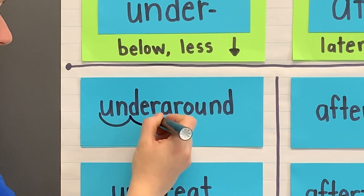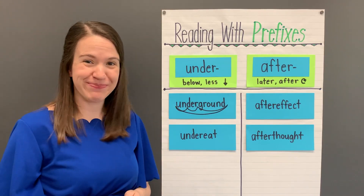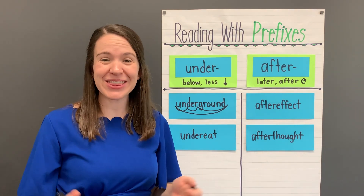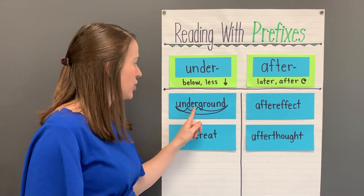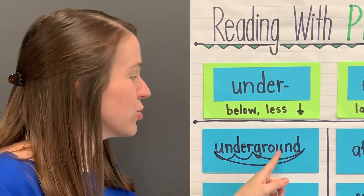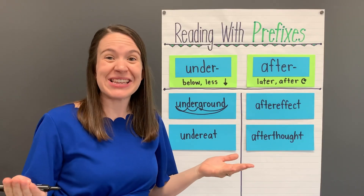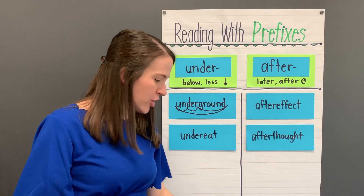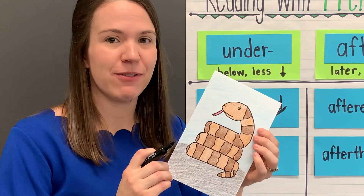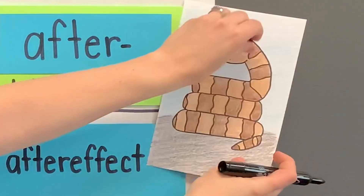Un-der-ground. Underground. This word is underground. We can understand this word by thinking about the prefix. Under means below or less, so underground means below the ground. While you might see some snakes burrowing underground, the northern water snake is more likely to be found swimming or warming itself on a rock. Let's put him right there.